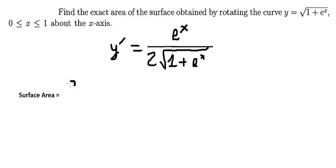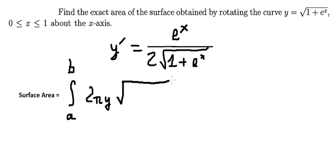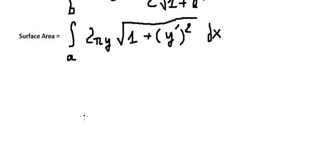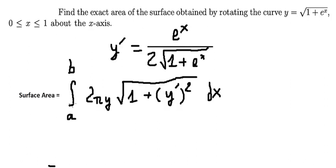Next we apply the surface area formula, which is the integral from a to b of 2π times y, multiplied by the square root of 1 plus the first derivative of y squared. The bounds of integration are from 0 to 1.